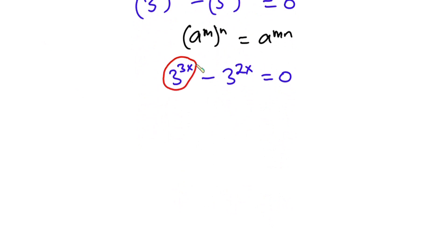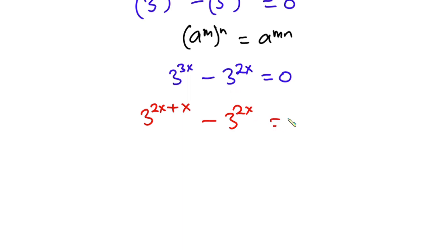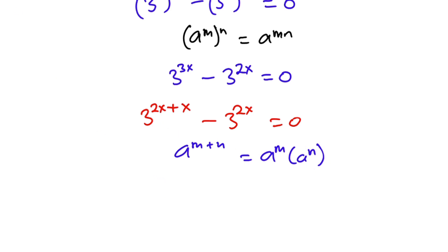Now let's pay attention to this term. We can rewrite 3 to the power 3x as 3 to the power 2x plus x, minus 3 to the power 2x, and this is equal to 0. From indices, if we have a to the power m plus n, this is the same as a to the power m times a to the power n. So we can write this as 3 to the power 2x times 3 to the power x, minus 3 to the power 2x, equals 0.